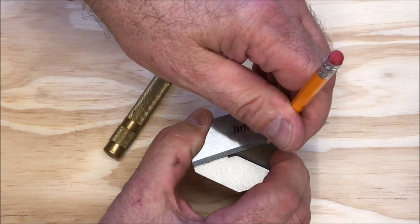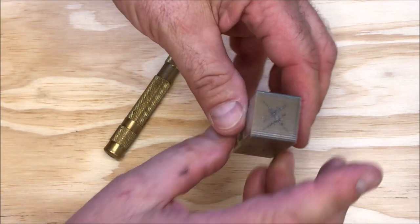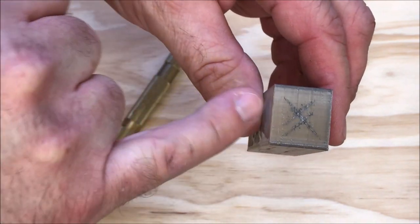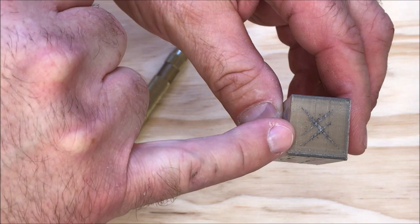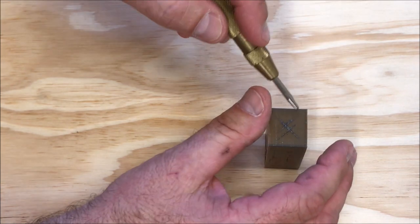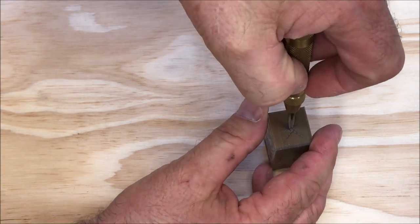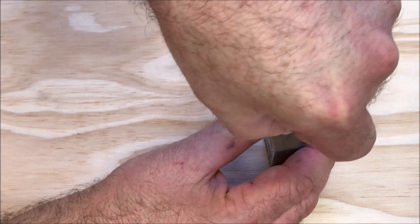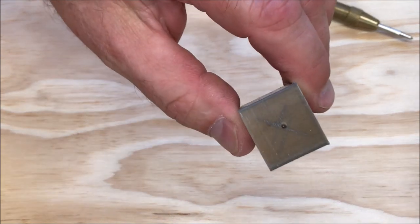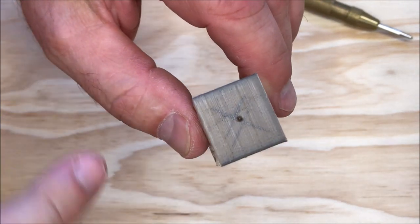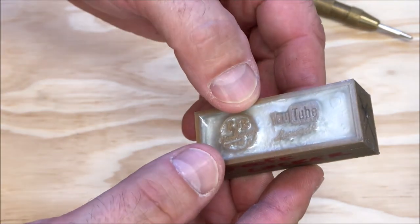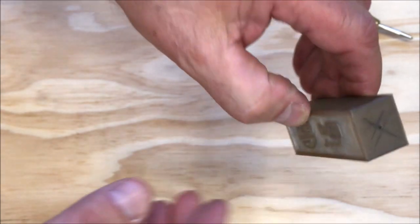I like to do all four corners. Notice how from this corner to this corner it's almost dead on, but from this corner to this corner there is a difference. We can now see that the center is somewhere in the middle of this line, so I'm going to take our punch, go right in the center, and pop it one time. Now I have a perfectly centered dimple on my blank and I'm ready to go to the drill press.